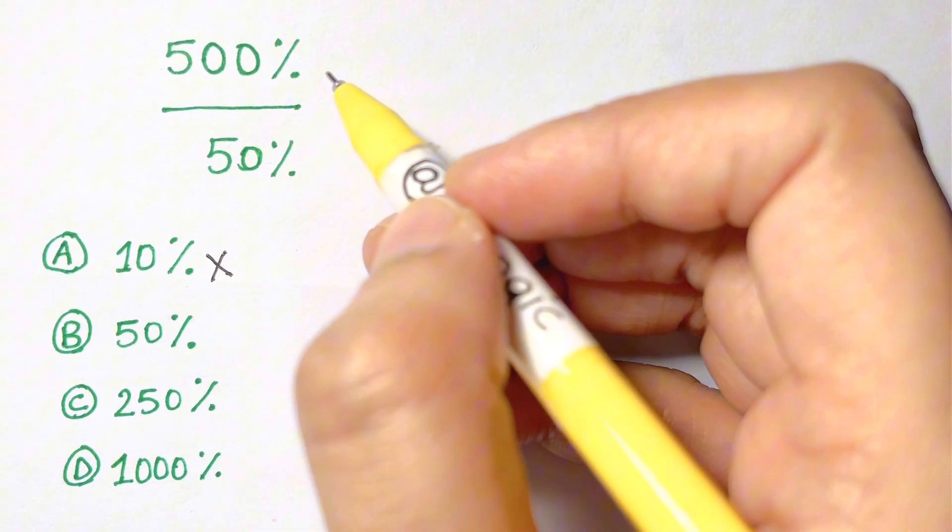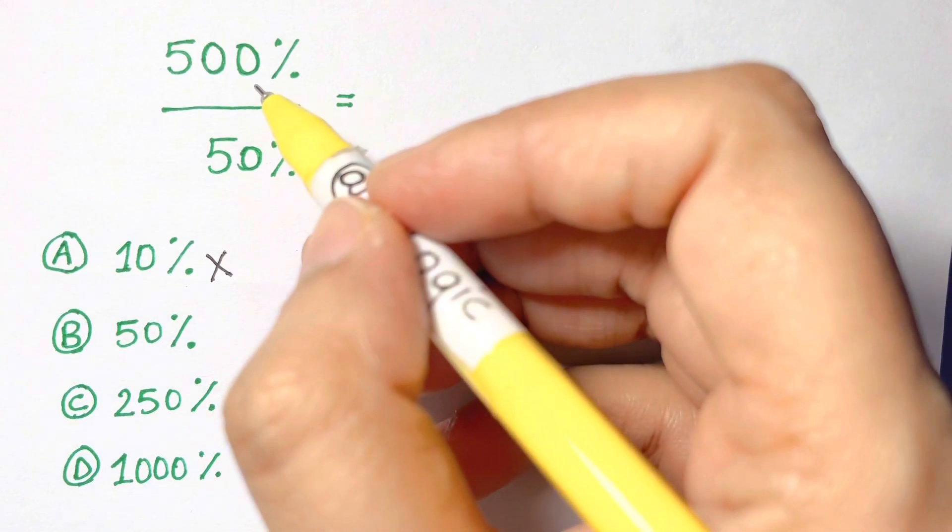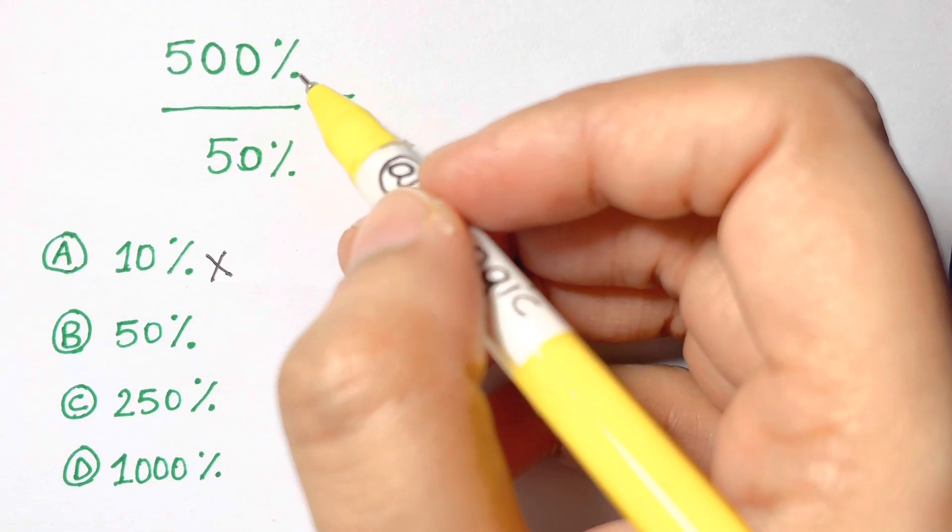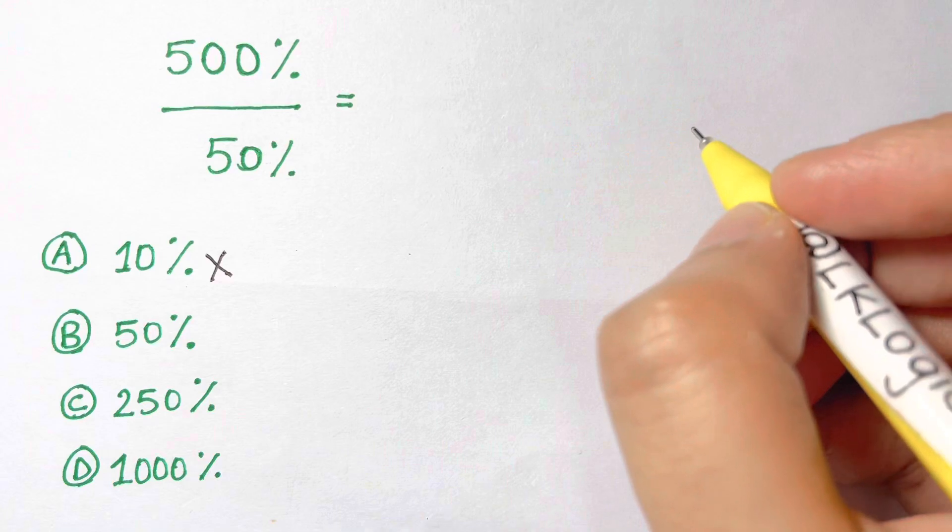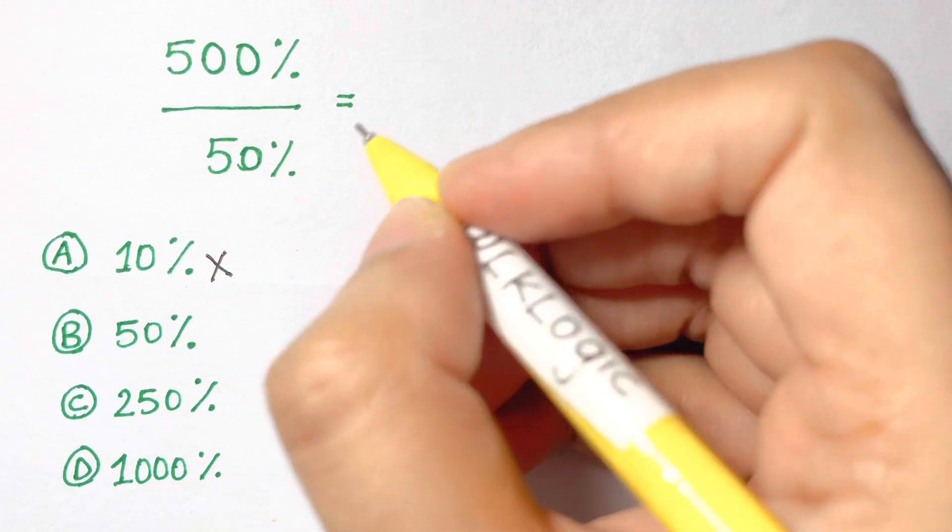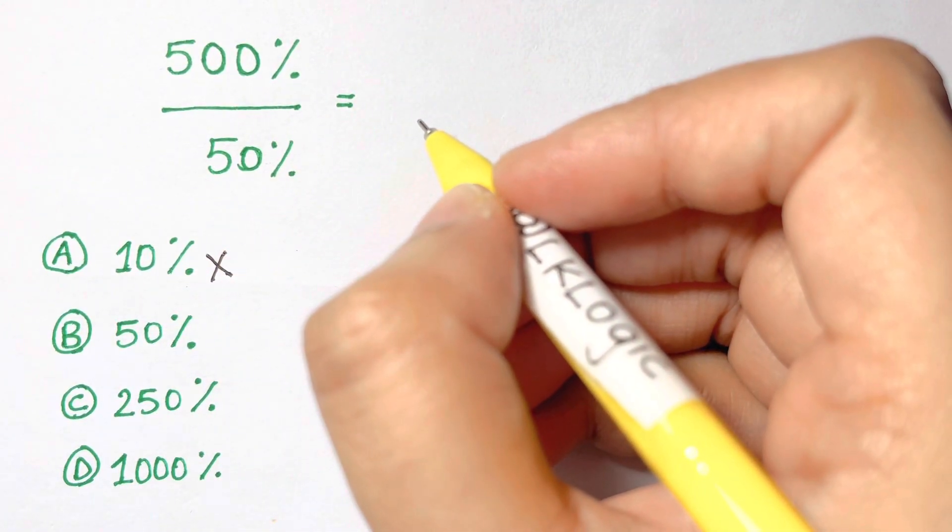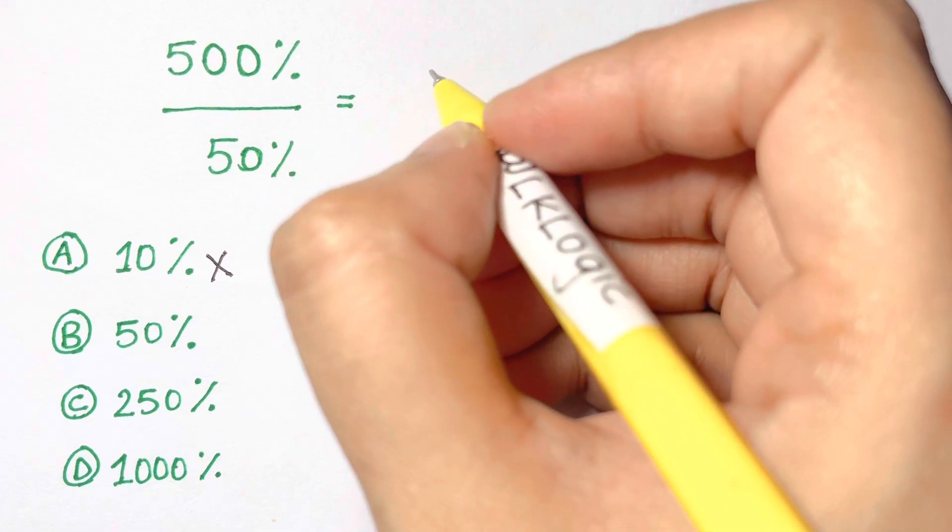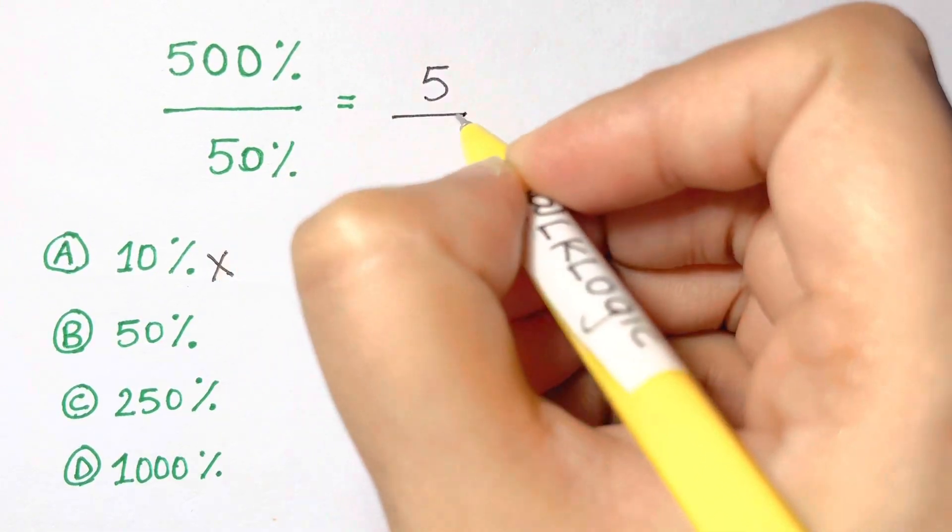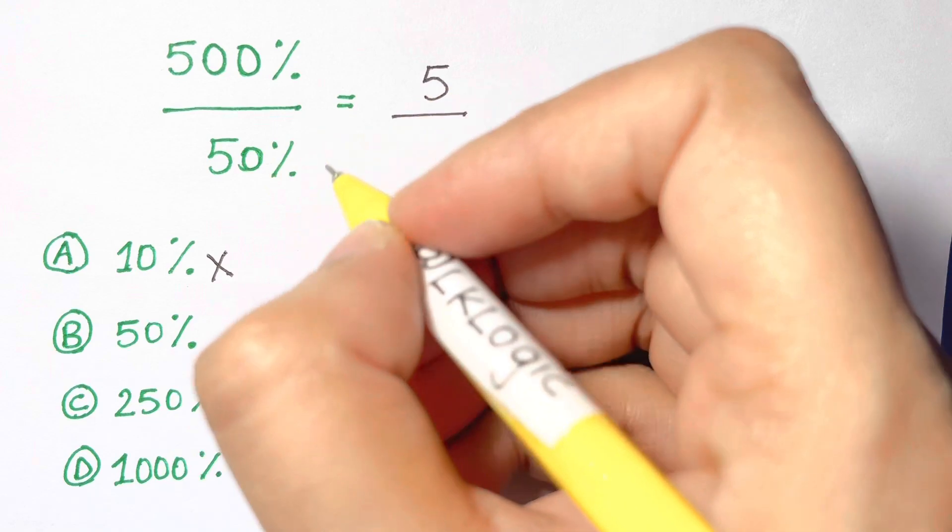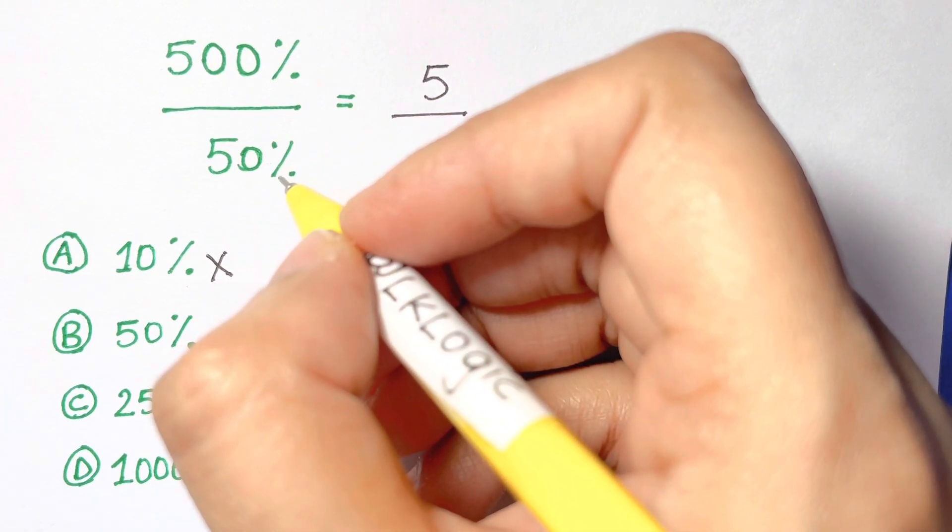When you're converting into decimals, you do 500 out of 100. 500 percent is 500 out of 100, so 500 divided by 100 is 5. And 50 percent divided by 100 - 50 divided by 100 is 0.5.